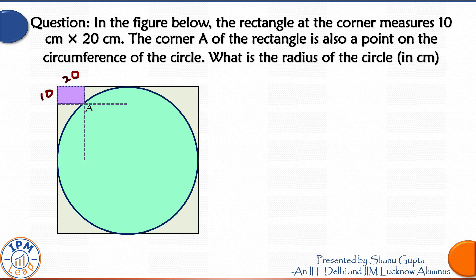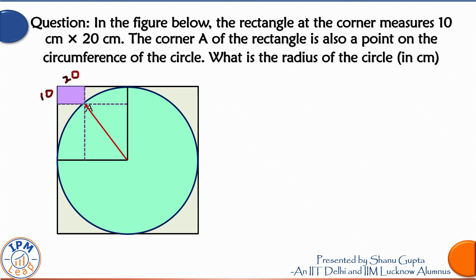Let's draw two more lines parallel to these dotted lines and passing through the center of the circle. It would also help if we join the center of the circle to the corner of the rectangle. This red line. Now I can see a right angle triangle. Do we know any of its sides?